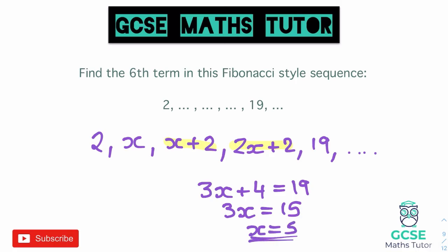So x equals 5. After 2 is 5. Then 2 plus 5 gives 7. 5 plus 7 gives 12. Quick check: 7 and 12 makes 19. Now 12 plus 19 gives us 31 as the sixth term.